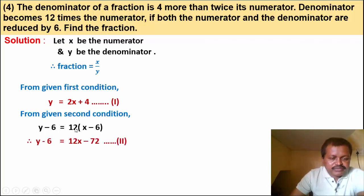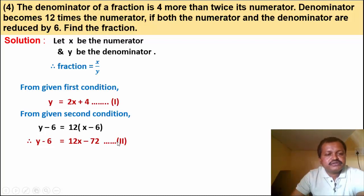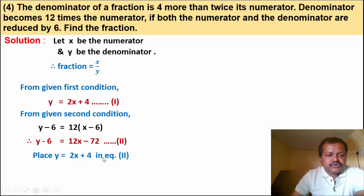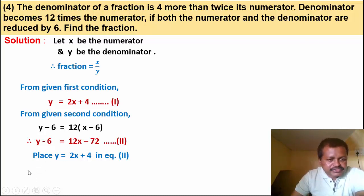Simplifying: y minus 6 equals 12 into x minus 12 into 6, which is 12x minus 72. This is equation number 2. Now place y equal to 2x plus 4 from equation 1 into equation 2.